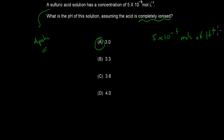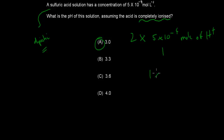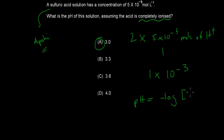But this is a diprotic acid, which means there are going to be more hydrogen ions. Since it's completely ionized, for every molecule there are 2 hydrogen ions, so we multiply that concentration by 2. We get 1 × 10⁻³. Using pH = −log[H⁺] = −log(1 × 10⁻³), we get a pH of 3. So A is the correct answer.